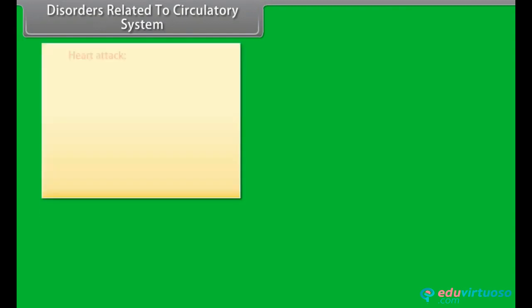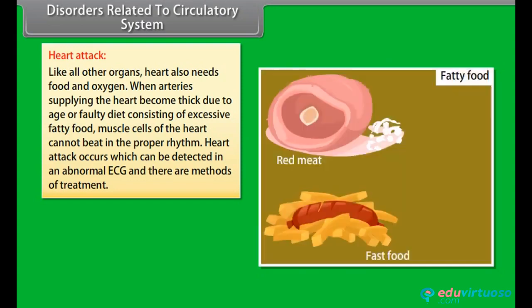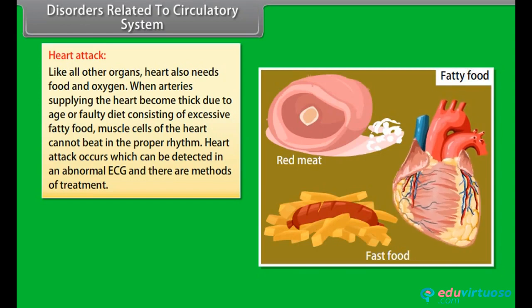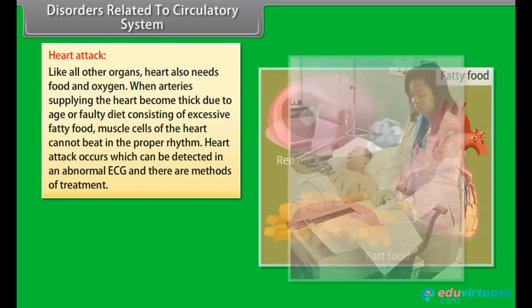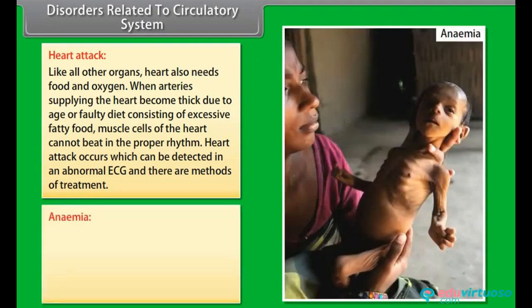Disorders related to the circulatory system include heart attack. Like all other organs, the heart also needs food and oxygen. When arteries supplying the heart become thick due to age or a faulty diet consisting of excessive fatty food, muscle cells of the heart cannot beat in the proper rhythm. A heart attack occurs, which can be detected by an abnormal ECG, and there are methods of treatment.